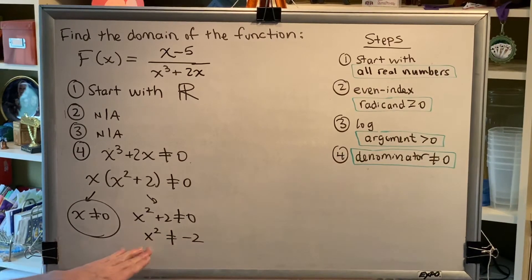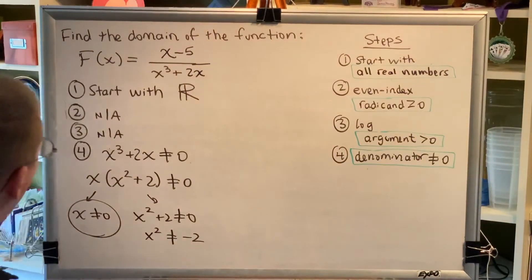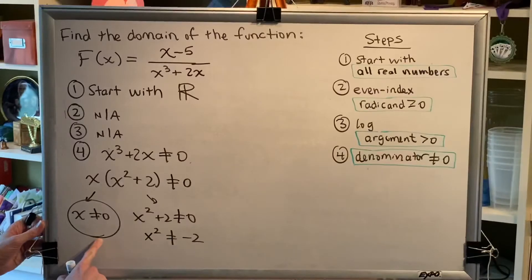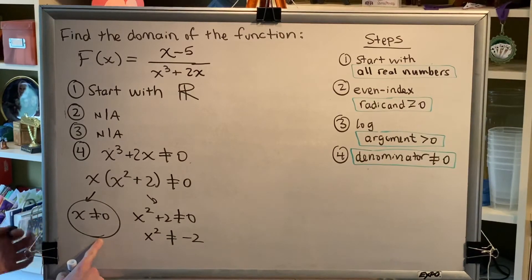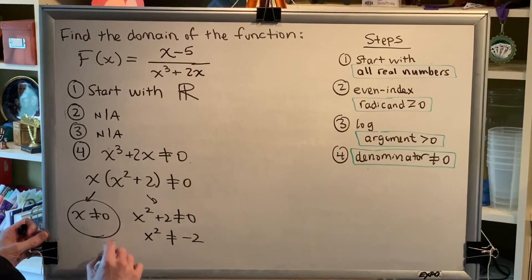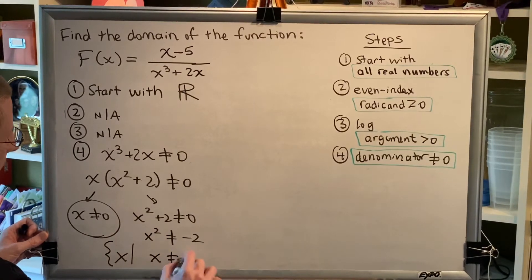So this statement is not telling me anything new about x, which means I can ignore this completely and my domain is going to be x is not equal to 0. So my final answer for this problem is x is not equal to 0. If I wanted, I could write this in set notation, the set of all x such that x is not equal to 0.